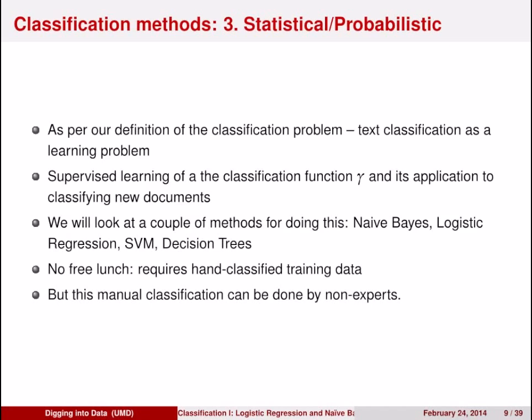The current state-of-the-art and best practice is to use statistical and probabilistic methods to do classification. We'll be spending the next two classes talking about these techniques: naive Bayes, logistic regression, support vector machines, and decision trees. While these methods are quite effective, they still require a large amount of training data — many examples of documents labeled with your classes. But fortunately, in contrast to building rule-based classifiers, this labeling can often be done by non-experts, for example all users of a web email system labeling whether a particular email is spam or not.